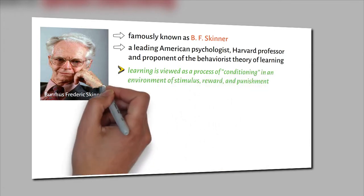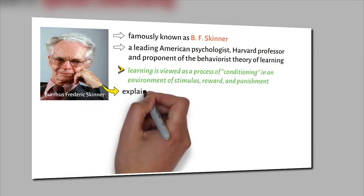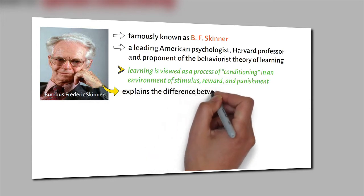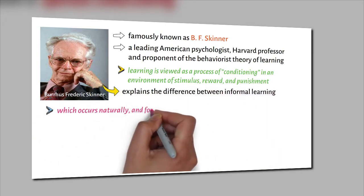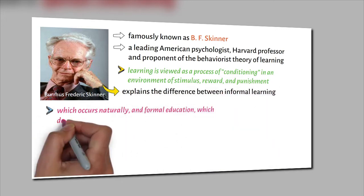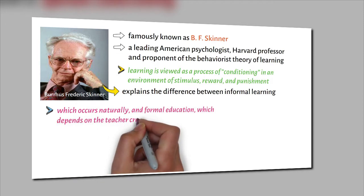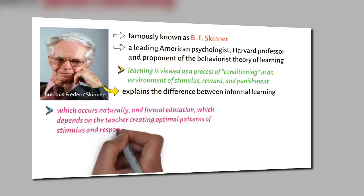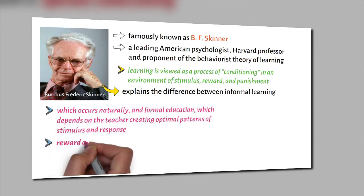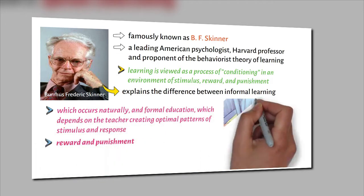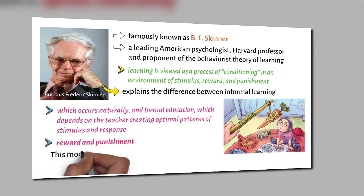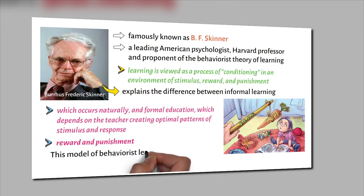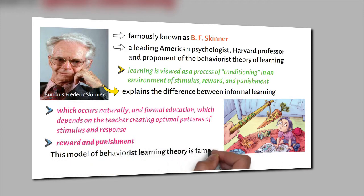Skinner explains the difference between informal learning, which occurs naturally, and formal education, which depends on the teacher creating optimal patterns of stimulus and response — that is, reward and punishment. This model of behaviourist learning theory is famously known as operant conditioning.